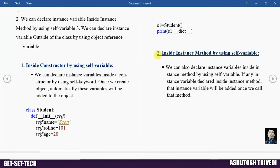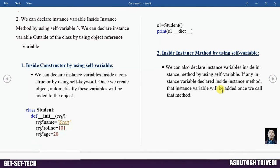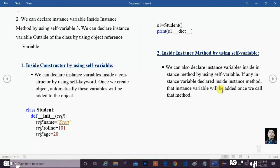Now we will discuss declaring an instance variable inside an instance method by using self variable. You can also declare instance variables inside an instance method using self. If any instance variable is declared inside an instance method, that instance variable will be added to the object once we call that method.